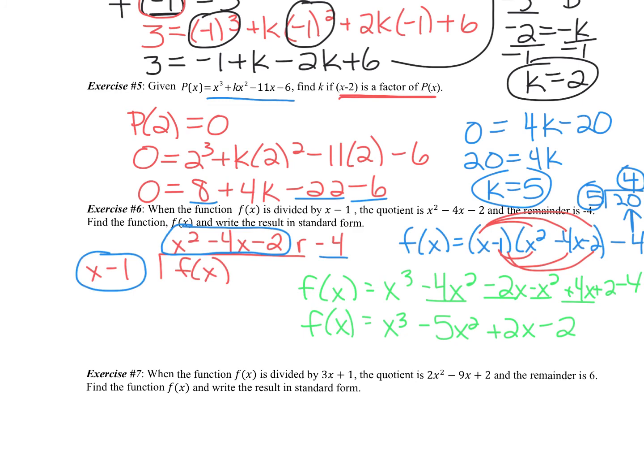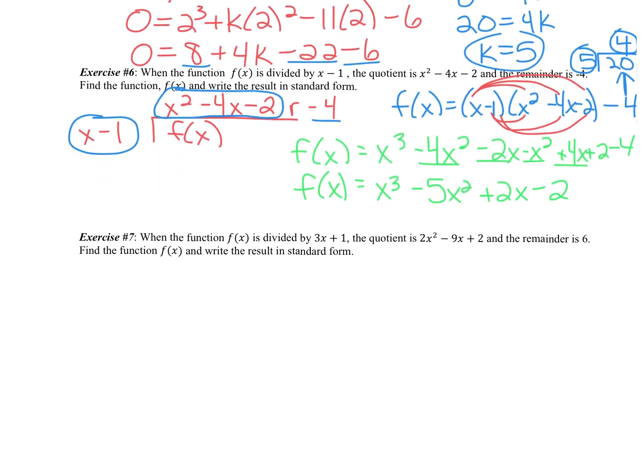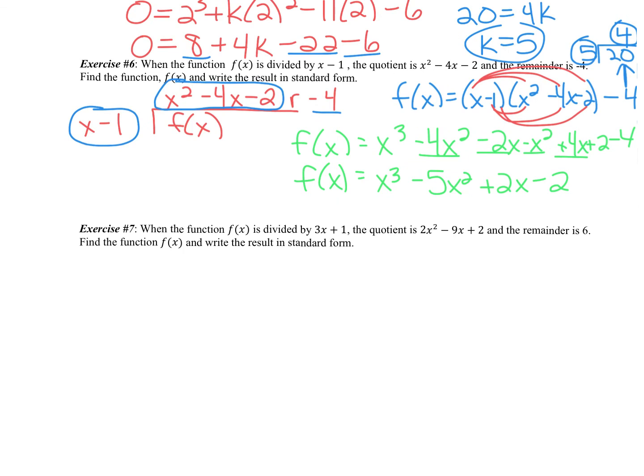The next problem is just more practice of that. It says when the function f of x is divided by 3x plus 1, the quotient is 2x squared minus 9x plus 2, and the remainder is 6. So I could set up this same type of problem, but basically what we end up doing is we end up multiplying this by this, and then tacking the remainder on the end, so plus 6. So this one is going to be 3x plus 1, 2x squared minus 9x plus 2, and then plus 6.